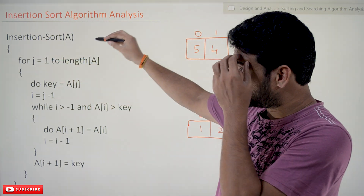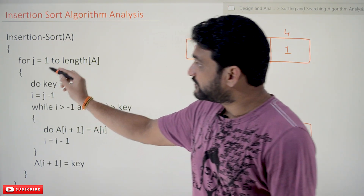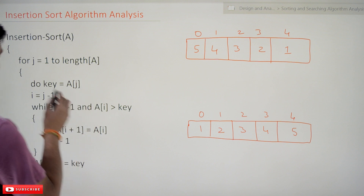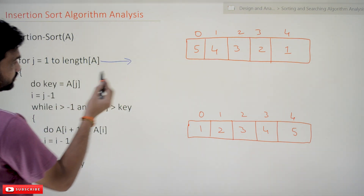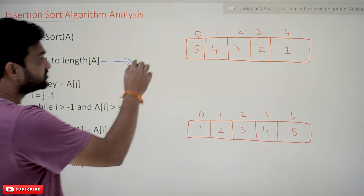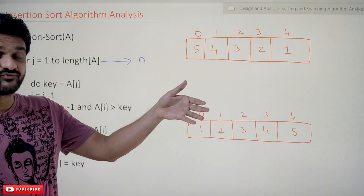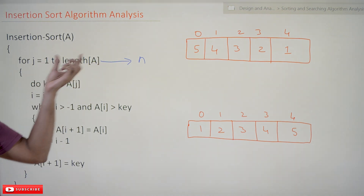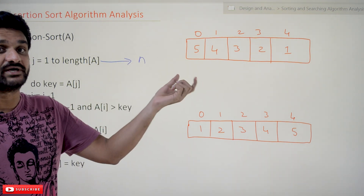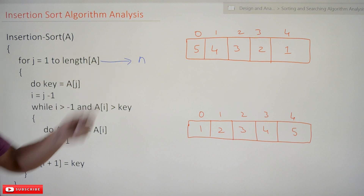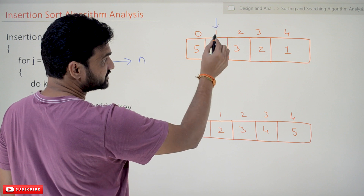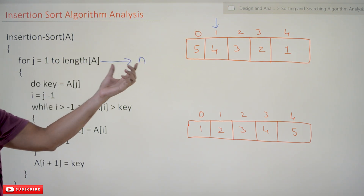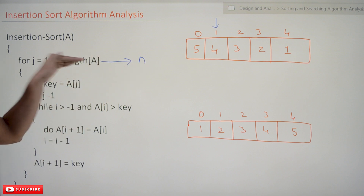Now coming to insertion sort — the same algorithm we discussed in data structures. We will try to find the step count of each and every step in the algorithm. For this first line of code, how many times does it execute in order to get the output? This line will get executed n number of times. As we've seen in iterative algorithms, the for loop conditional statement will get executed n plus 1 number of times.